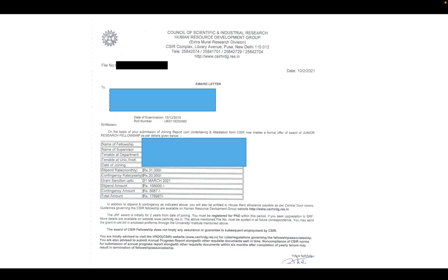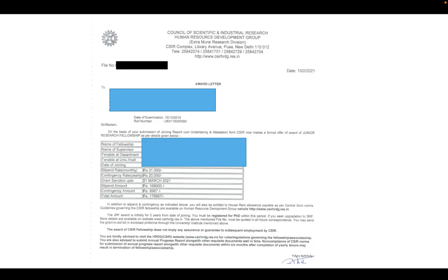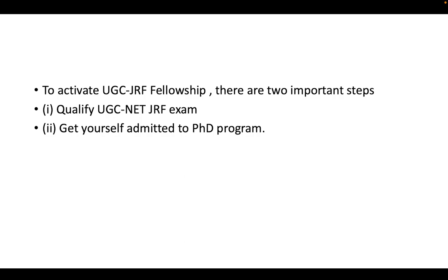The next step is to apply for the award letter. To apply for the award letter, you should have your CSIR-JRF or UGC-JRF certificate. This is how the award letter is sent by CSIR to your respective email. To activate your UGC-JRF or CSIR-JRF fellowship, there are two important steps: qualify UGC-NET or CSIR-JRF, and get yourself admitted to a PhD program.